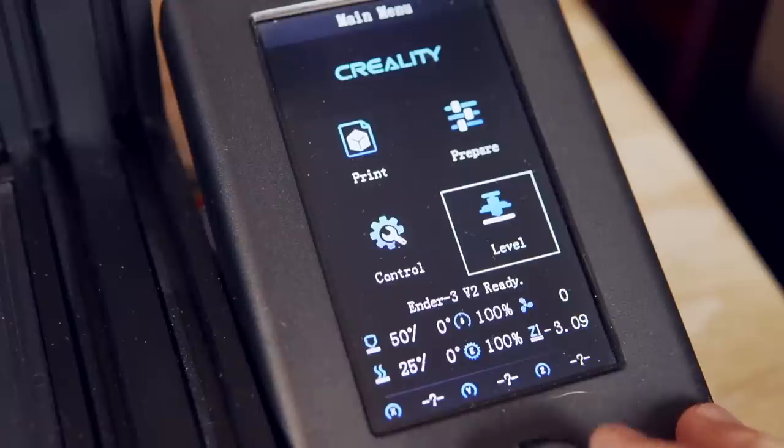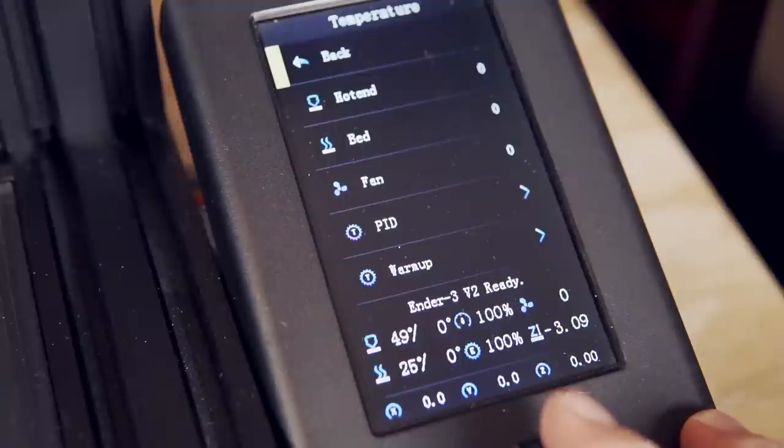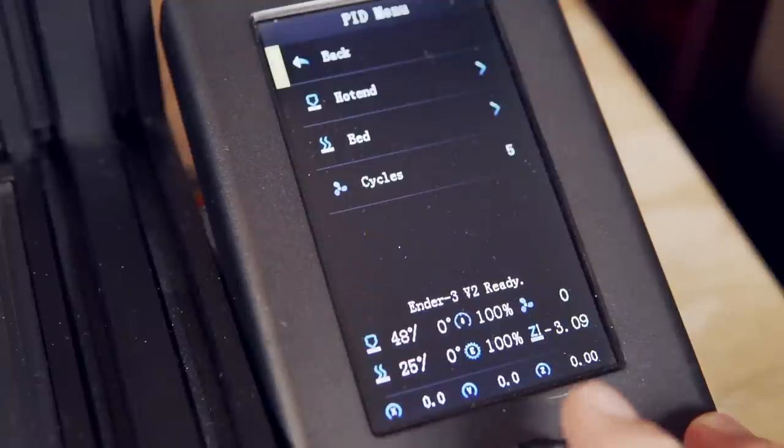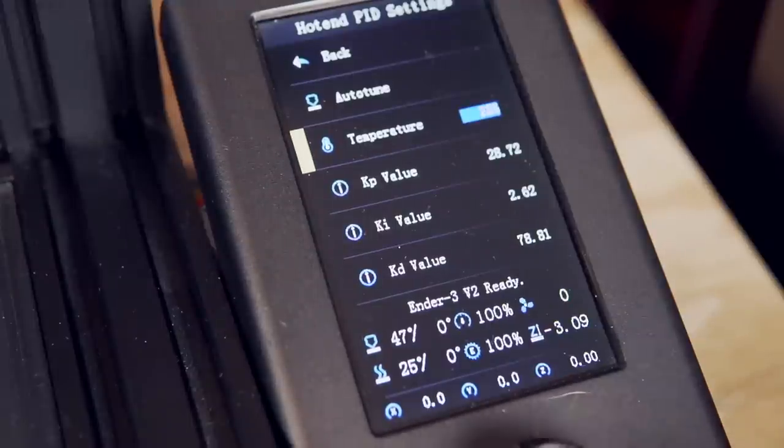At this point you're ready to rock and roll, and the only thing I did was a quick PID tune. Since I have Jyers firmware, they can easily PID tune the machine from the screen itself, and if you have an Ender 3 V2 I highly recommend installing this. I can link in the description to the guide that I made.